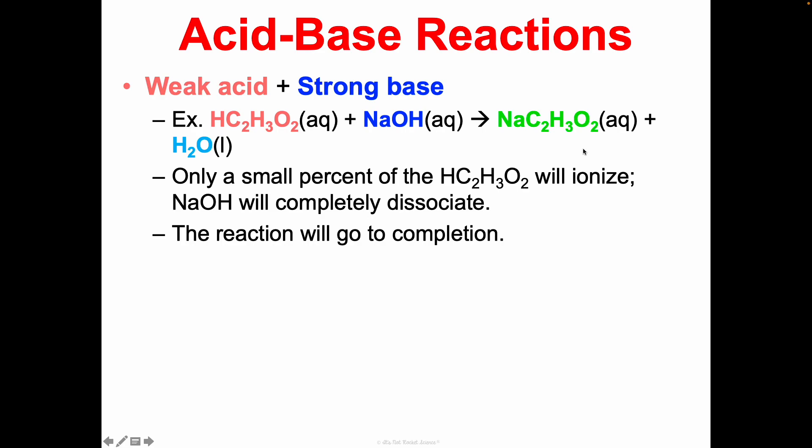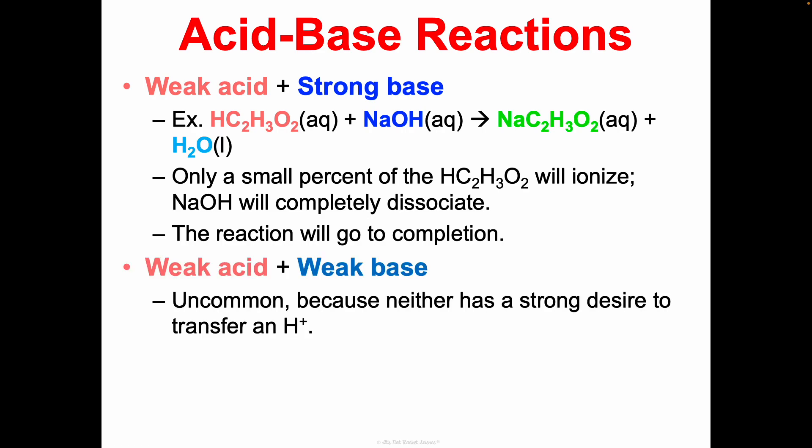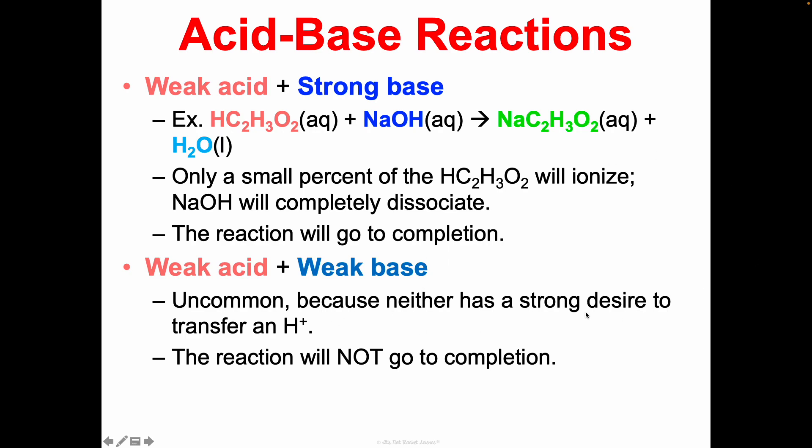With a weak acid and a strong base — like acetic acid reacting with sodium hydroxide to get sodium acetate and water — only a small percent of the acetic acid will ionize, but the NaOH completely dissociates. The reaction goes to completion, but some acetic acid will remain in solution. A weak acid with a weak base is actually uncommon because neither has a strong desire to transfer or receive a hydrogen ion, so this will not go to completion and we won't really see it in class.